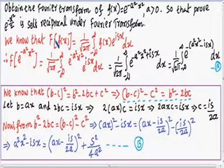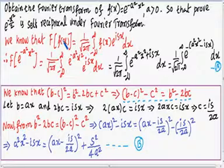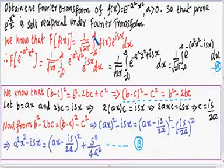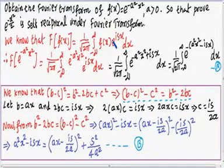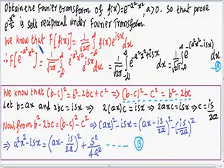We know that the Fourier transform of f(x) is written as F{f(x)} = 1/√(2π) times the integration from minus infinity to plus infinity of f(x) · e^(isx) dx. Here, f(x) = e^(-a²x²).